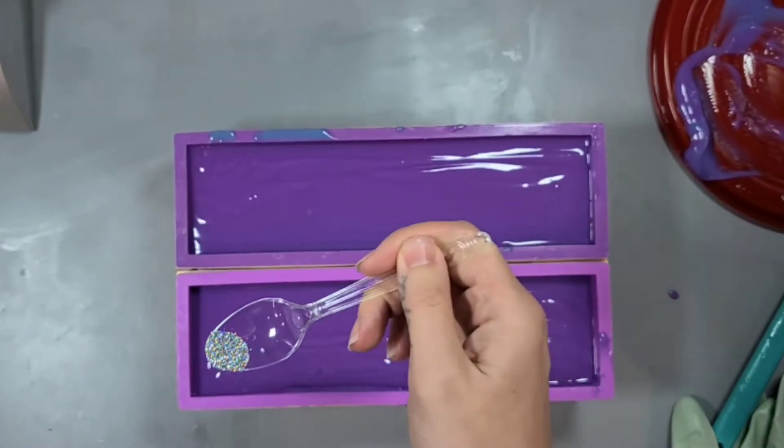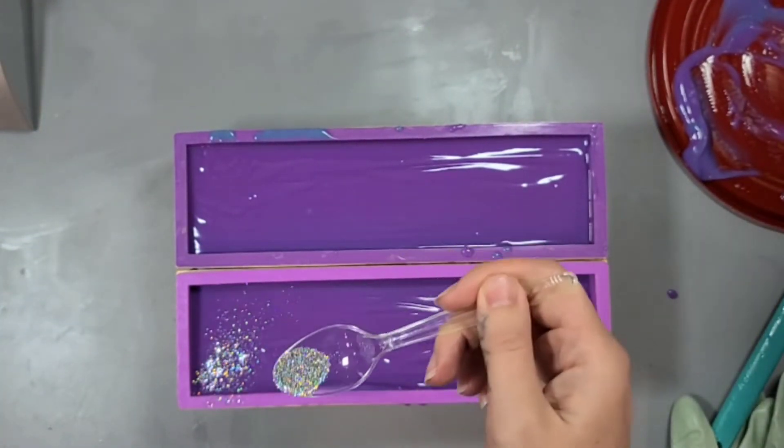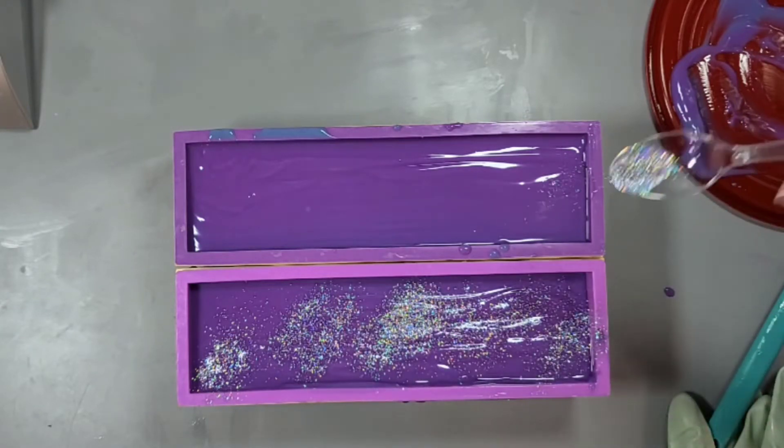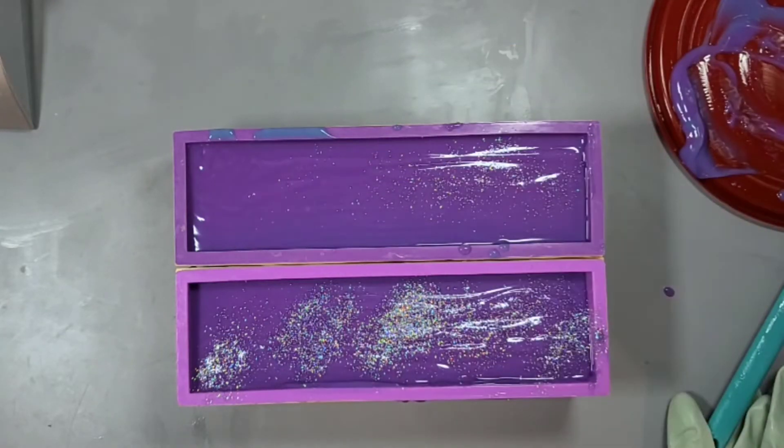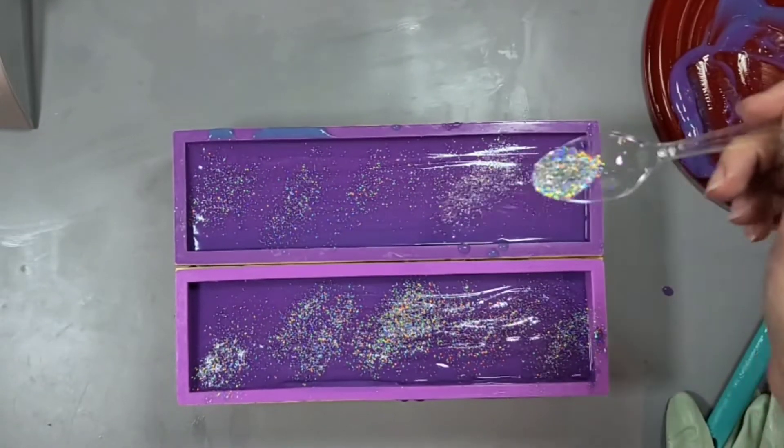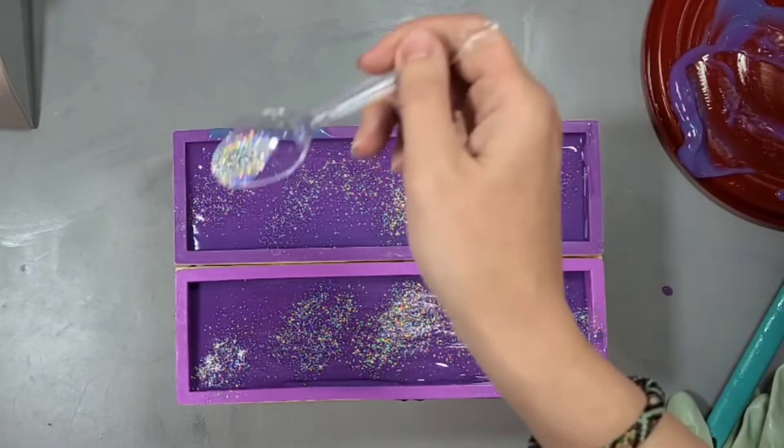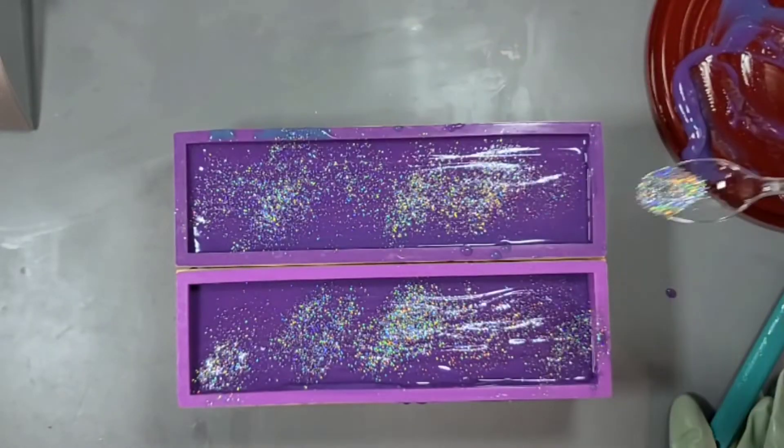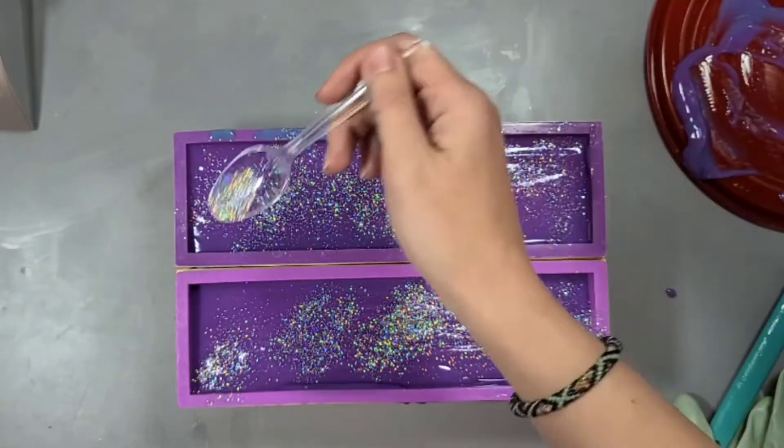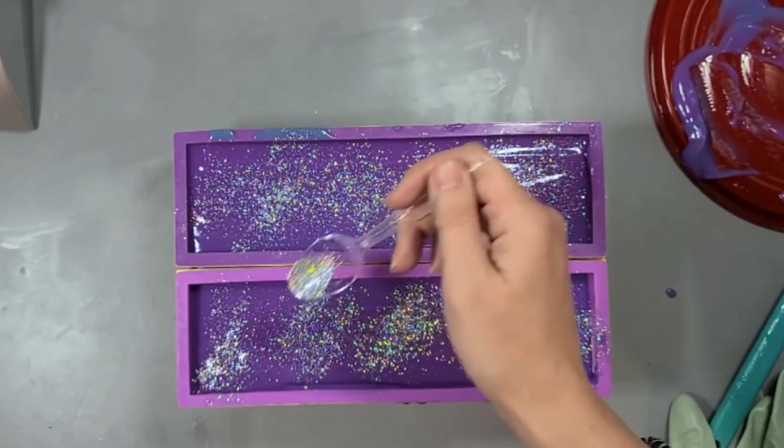So now I'm adding glitter. I love glitter, and I think it looks really good with the purple and the blue. So I did use my biodegradable glitter from Mad Micas. This is Into the Mystic.